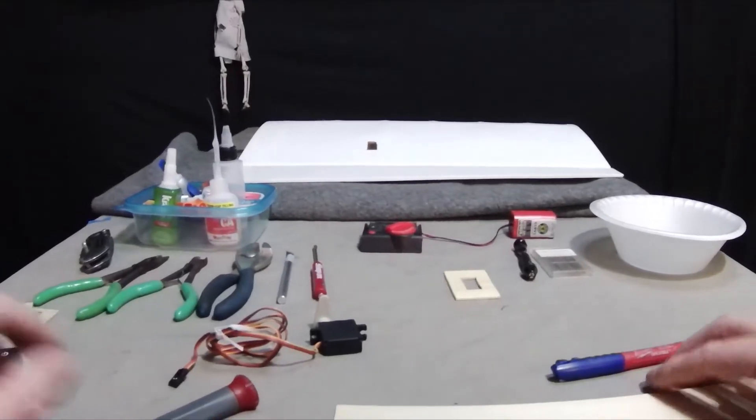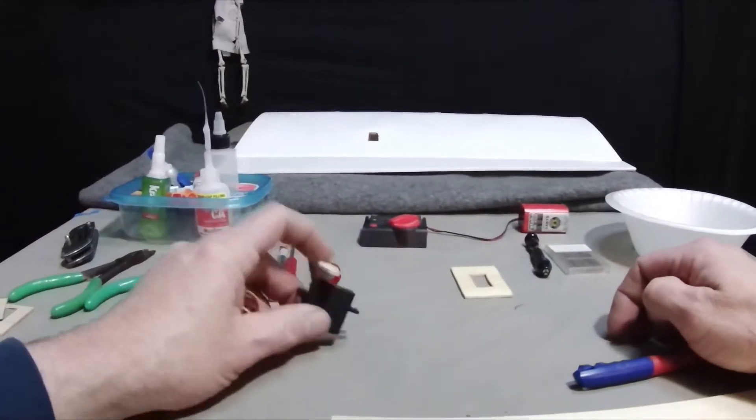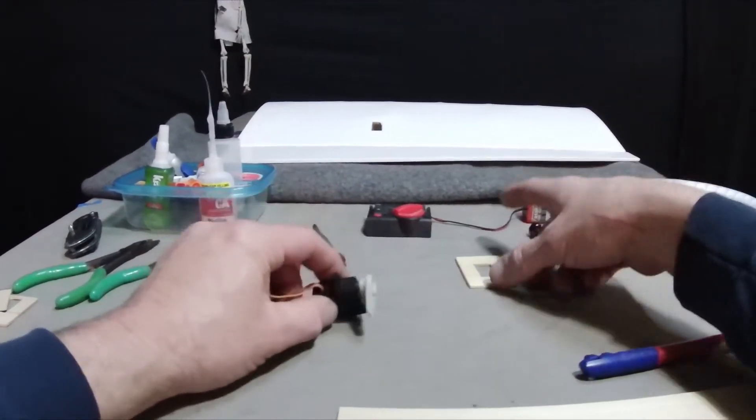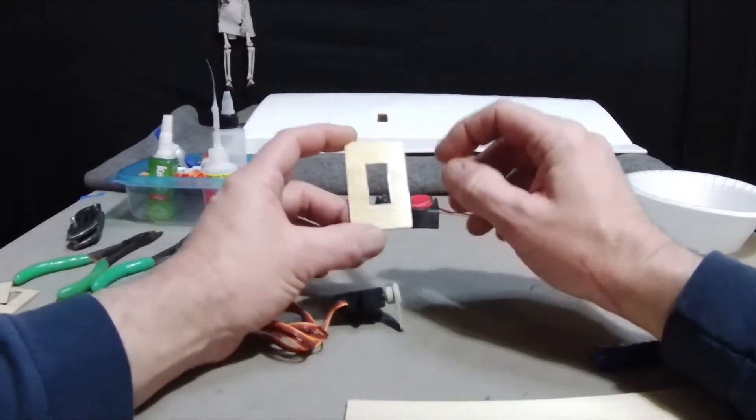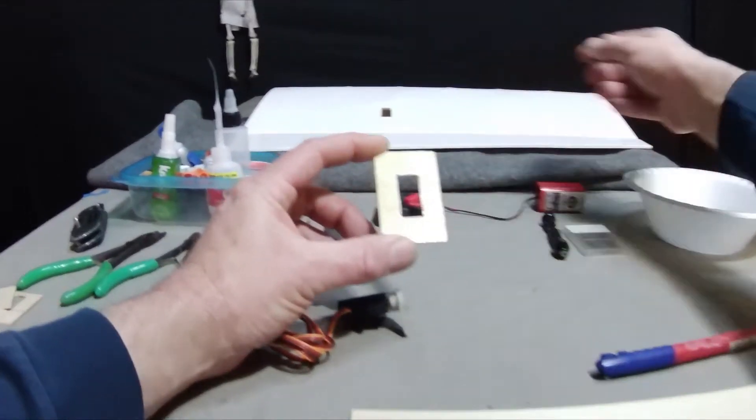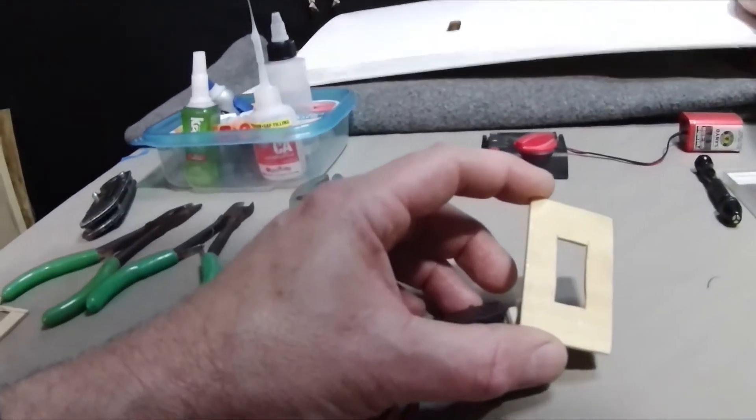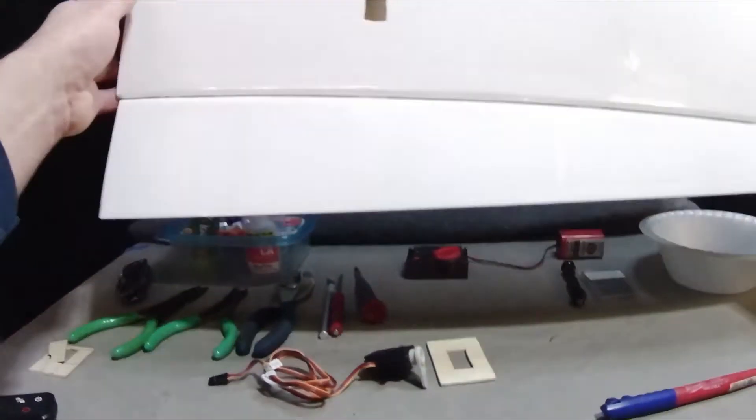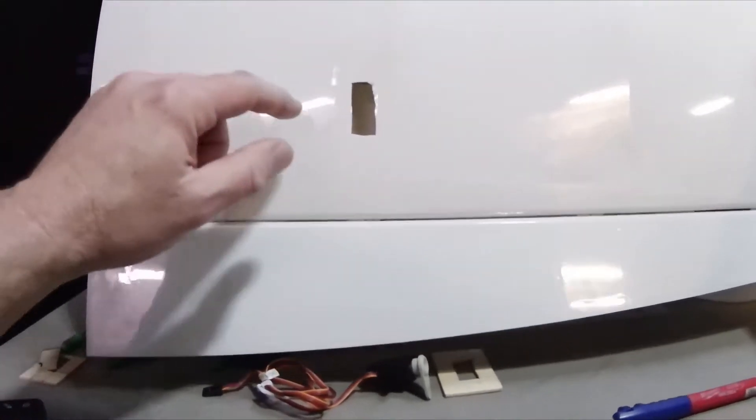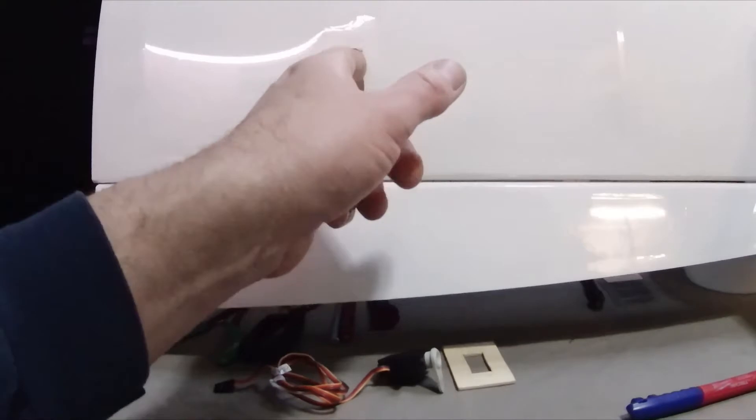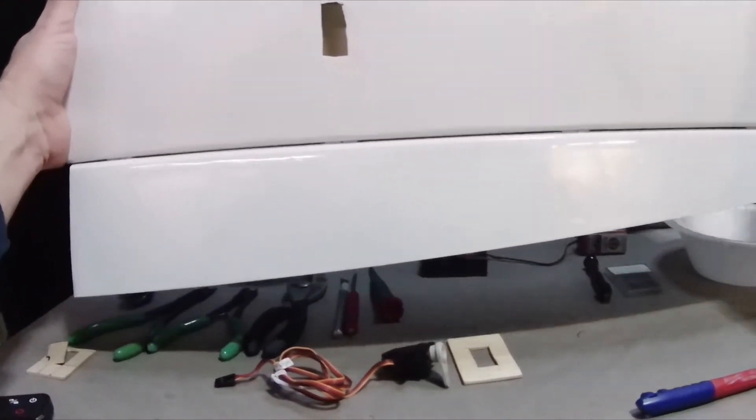Alright there guys and gals, in this episode we're going to mount a servo in the wing. In the previous episode, we had made an adapter plate to adapt the servo to the hole that's provided for the Uproar version 2.